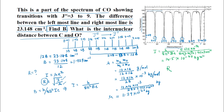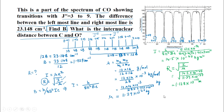So we have to find the value of R equals the square root of I divided by μ, that is the square root of 14.5 times 10⁻⁴⁷ divided by 11.39 times 10⁻²⁷. What we get is 1.128 times 10⁻¹⁰ meter. We can write this as approximately 1.13 times 10⁻¹⁰ meter, or in other words, 1.13 angstroms or 113 picometers.